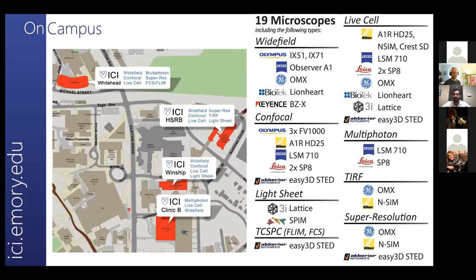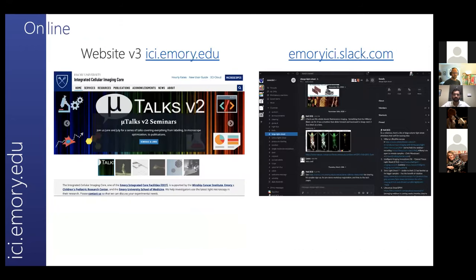We are spread across campus with 19 different microscopes. We can advise and guide you to the right one for your needs. We are online at ic.mr.edu and also on Slack at emoryici.slide.com for continued conversations related to imaging.